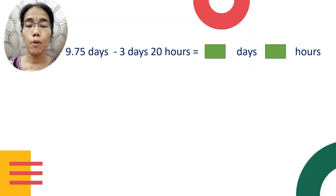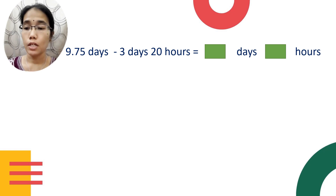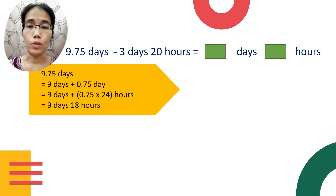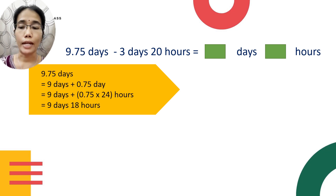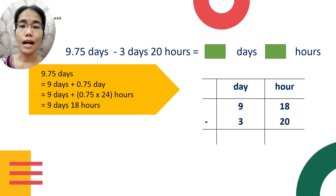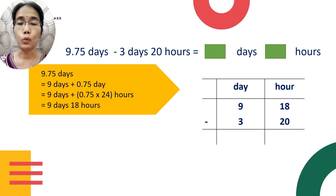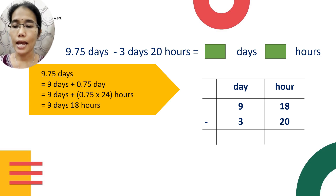Next example: 9.75 days minus three days and twenty hours, and your answer must be in days and hours. Convert 9.75 days to days and hours — once you convert, you'll get nine days and 18 hours. Now subtract using a T-line. As you can see, 18 cannot be subtracted from 20.